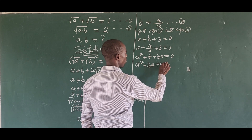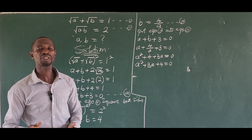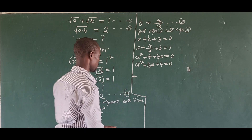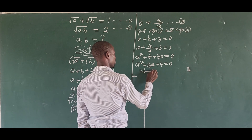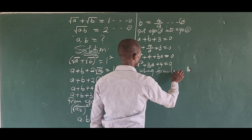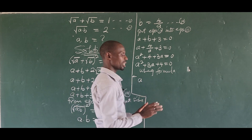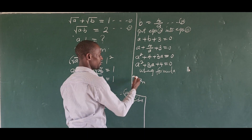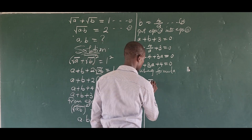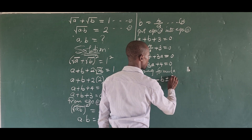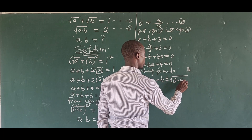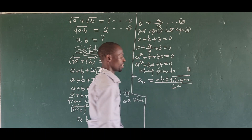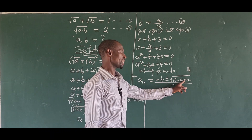This is a quadratic equation, so we solve for a using the formula method. Using the quadratic formula: the variable is a, but since the letter 'a' also appears as a coefficient in the formula, we'll call our unknown 'a_n' to differentiate. The formula is: a_n equals minus b plus or minus sqrt(b squared minus 4ac), all over 2a.